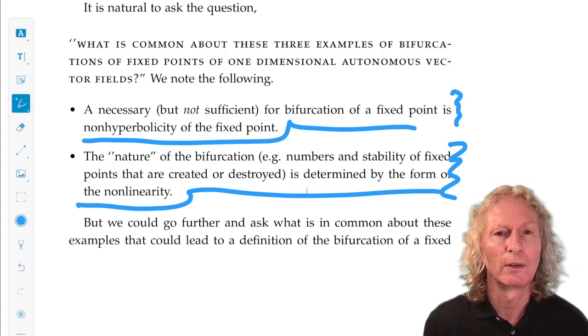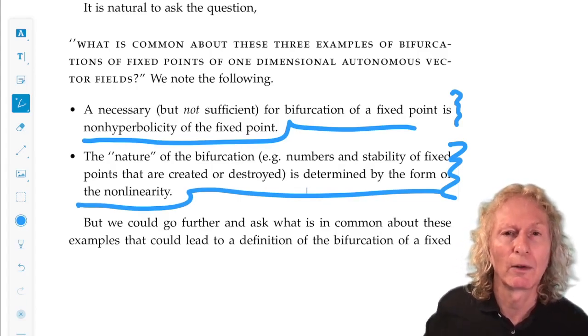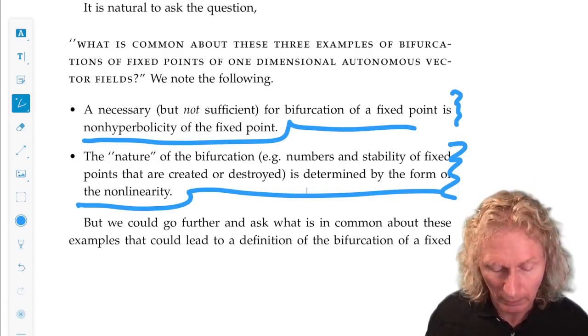Just go back and look at the three examples - saddle node, transcritical, and pitchfork - and see how the non-linear terms were different in those cases.